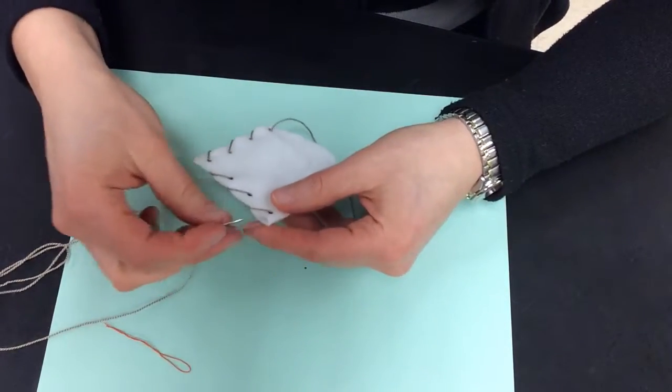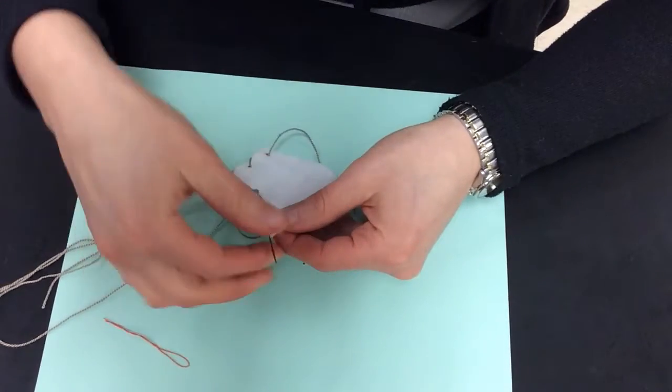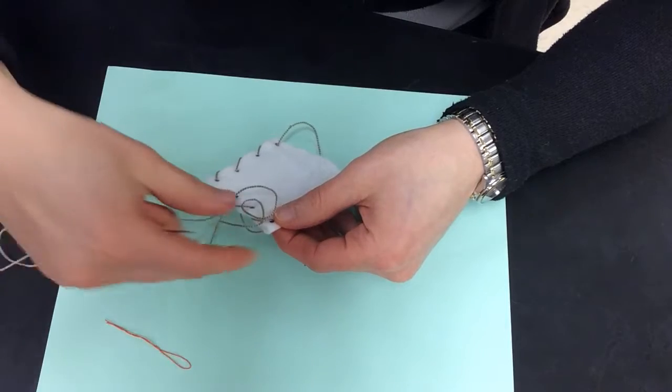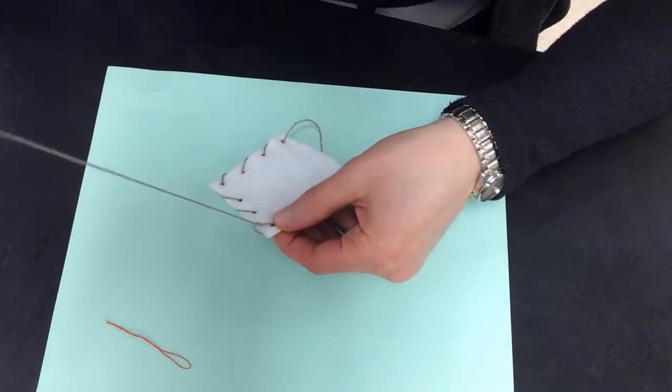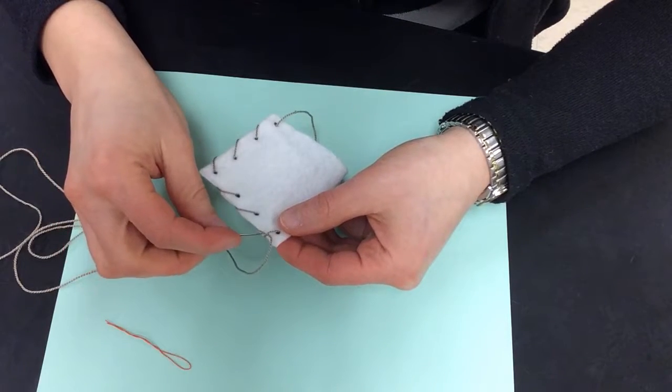And one way that I can tie this off is to come back and go under my last stitch, and pull the thread all the way through. And then under again.